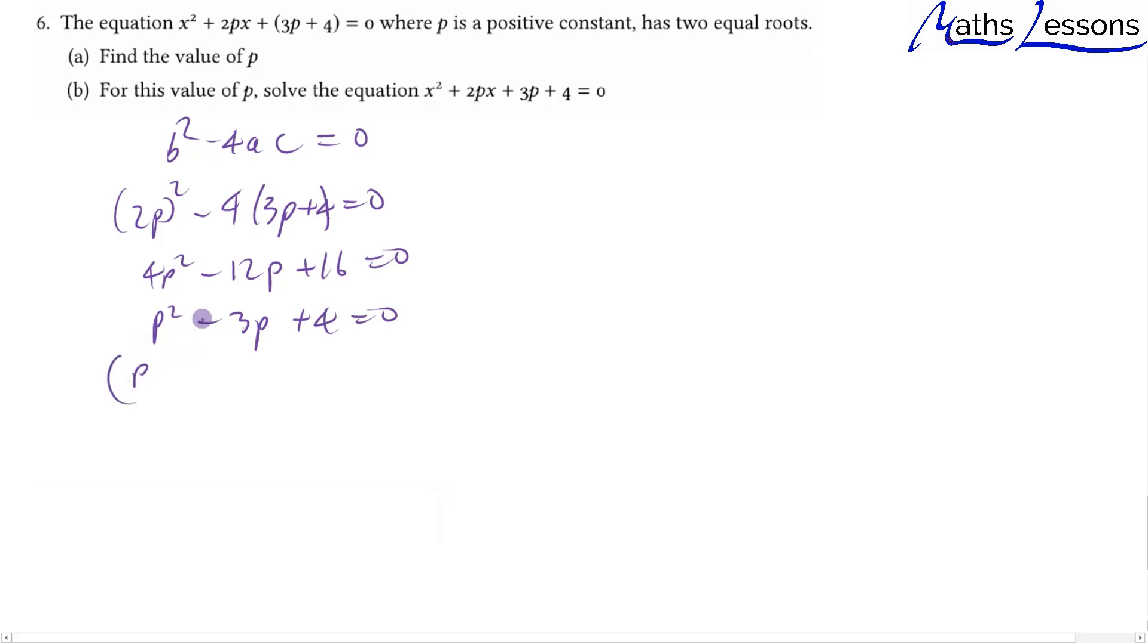We can factorize and we get (p - 4)(p + 1) = 0. Therefore p equals 4 or minus 1, but because it's a positive constant, it's not that one, so p must equal 4.